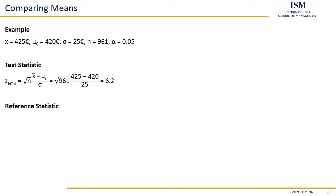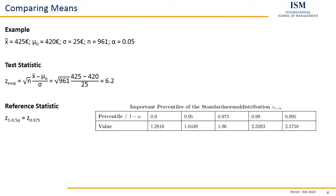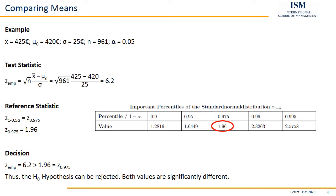We have the test statistic. For the reference statistic, we perform a two-sided test because the question just says 'deviates' — it could be smaller or larger. So we use z_0.975, which gives us a reference statistic of 1.96. Comparing test and reference statistic: 6.2 is larger than 1.96, so H0 is rejected. In other words, both values are significantly different — this year's average income deviates from last year's income.